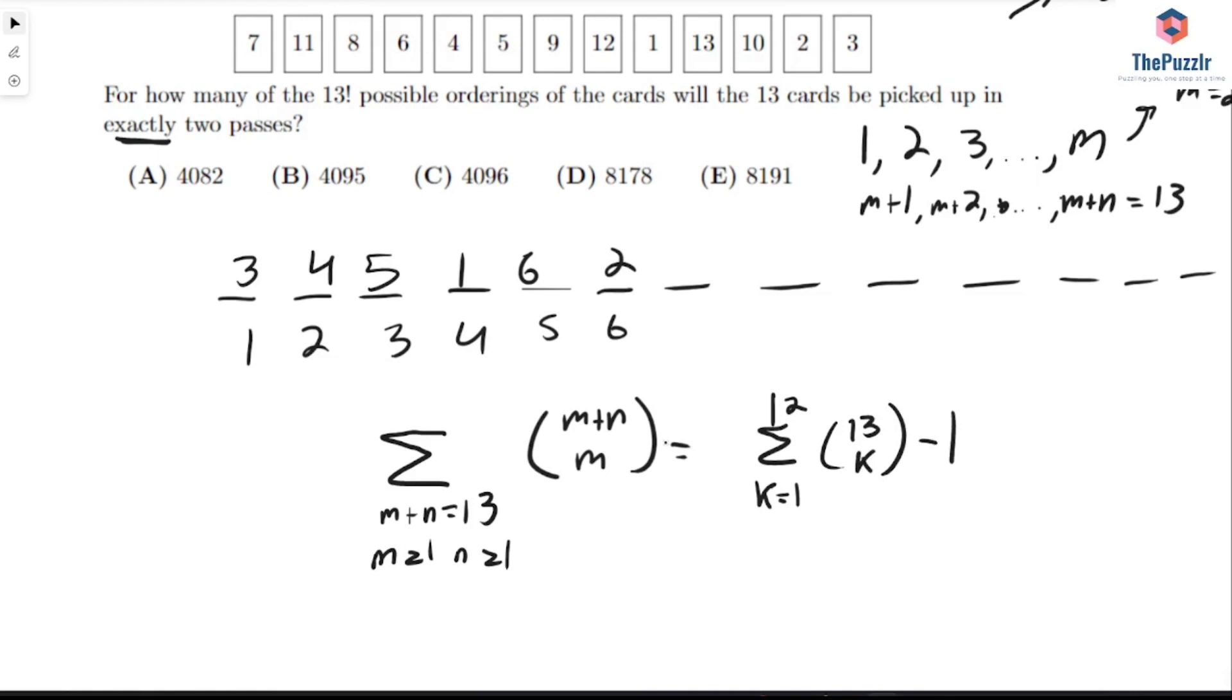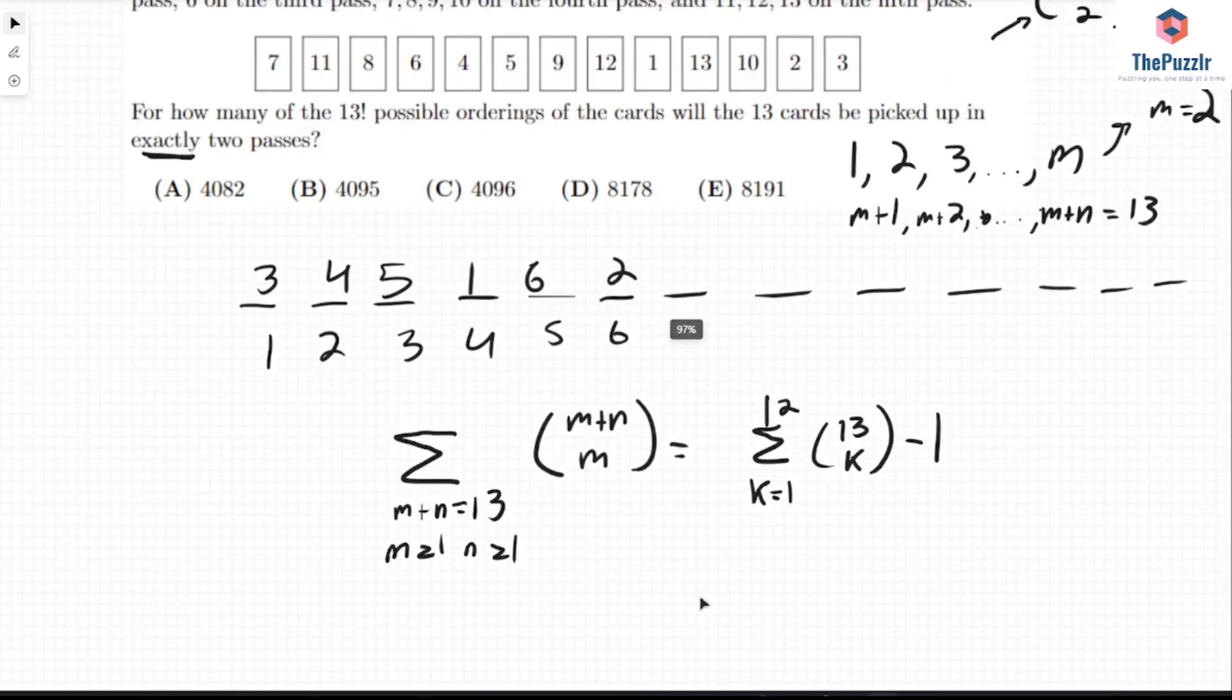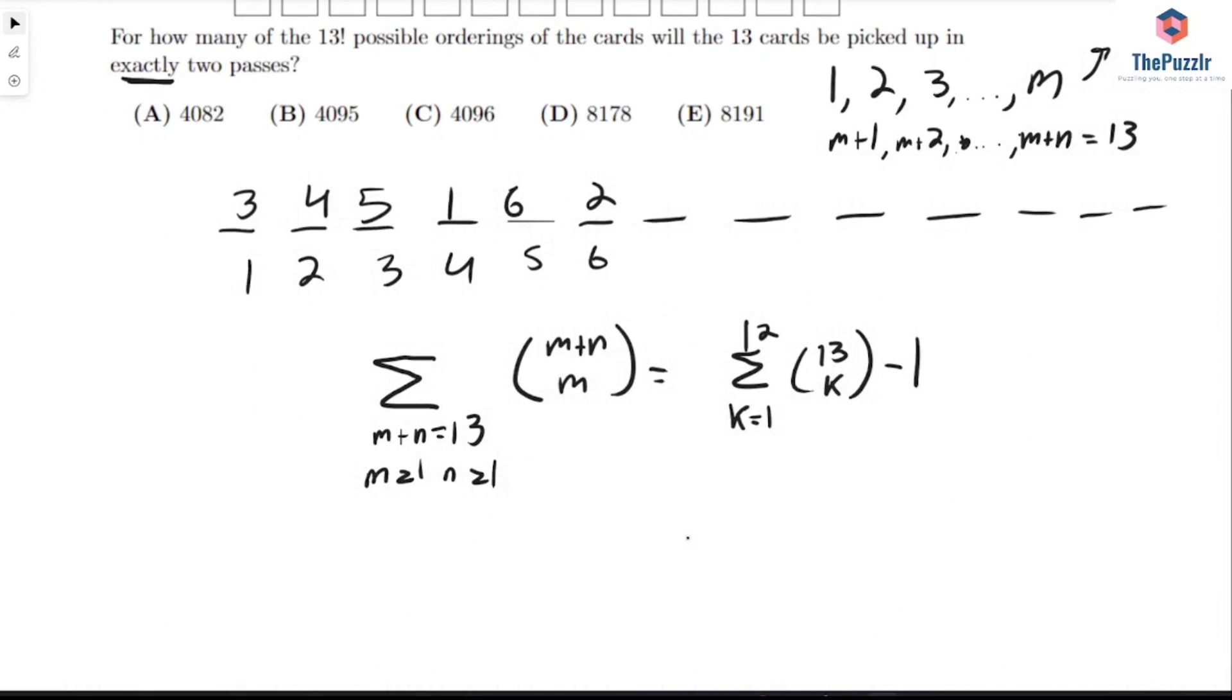Now this isn't a nice number to calculate, right? Like there's 12 numbers that you have to calculate. We don't want to do that on the AMC. What we can do here is we have a nice identity that we can use. So if we have some number of the form N choose 0 plus N choose 1 plus N choose 2 all the way to N choose N, well, this represents just picking any subset of the N numbers because it has all the sizes included. So either each number is going to be in the subset or not in the subset. And there's N numbers. So this is 2 to the N.